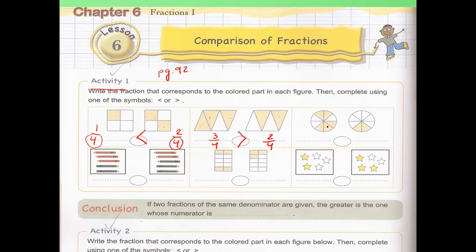Here, how many parts did we color? Five out of the total eight. And here, we colored two out of eight — also eight total parts. In which one did we color more? In the first figure. So five over eight is bigger than two over eight.